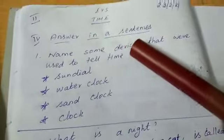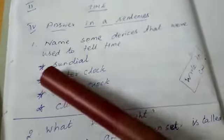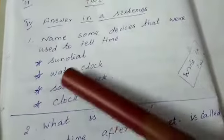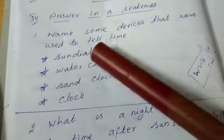So name some devices, D-E-V-I-C-E-S, devices that were used to tell time. Sun dial, S-U-N, sun, D-I-A-L, dial, sun dial.